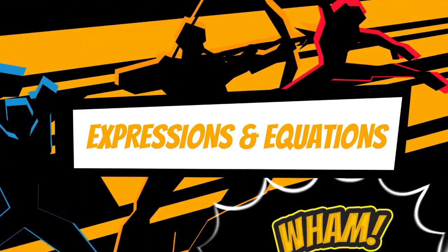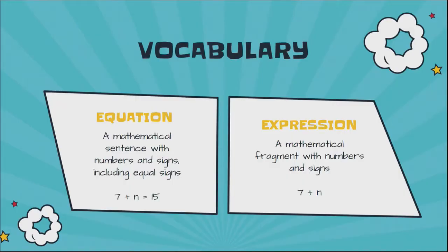In this video we're going to talk about equations and expressions. The vocabulary words are equation and expression. An equation is a math sentence that has numbers and signs — meaning addition, subtraction, multiplication, division signs — and it also includes an equal sign. You might notice the connection between the word 'equation' and the fact that it always includes an equal sign.